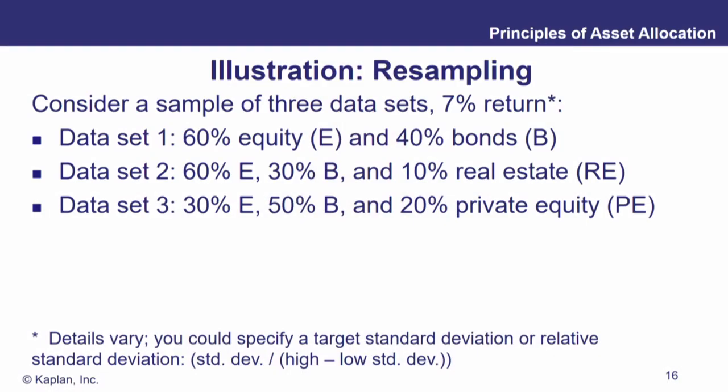In this example, we're considering a sample with three data sets, targeting a 7% return. Data set one: 60% equity, 40% bonds. Data set two: 60% equity, 30% bonds, 10% real estate. Data set three: 30% equity, 50% bonds, and 20% private equity. So we have three different asset allocations across the sample.